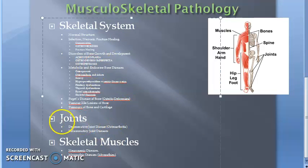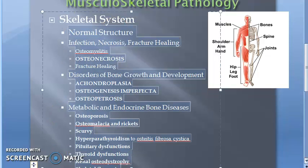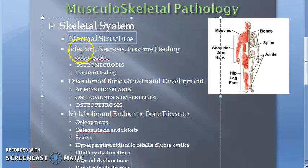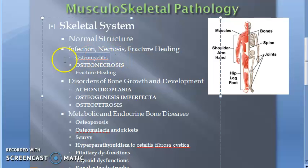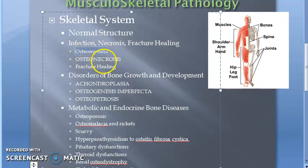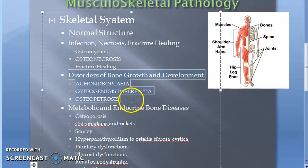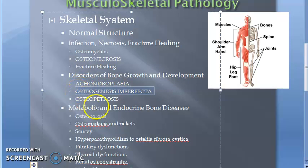Coming to the skeletal system, we will first look at the normal structure of the skeletal system. Then infection — osteomyelitis. Then osteonecrosis, then fracture healing. After that, disorders of bone growth and development: achondroplasia, osteogenesis imperfecta, and osteopetrosis.